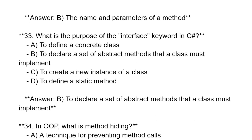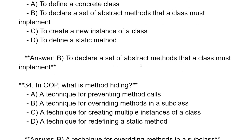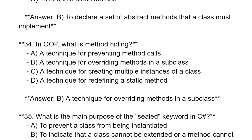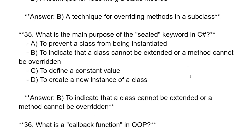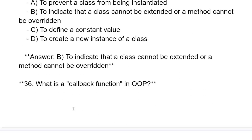What is the purpose of the interface keyword in C#? To declare a set of abstract methods that a class must implement. In OOP, what is method hiding? A technique for overriding a method in the subclass. What is the main purpose of the sealed keyword in C#? To indicate that a class cannot be extended or a method cannot be overridden.